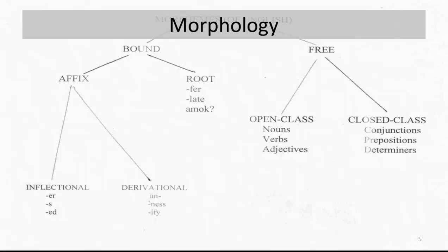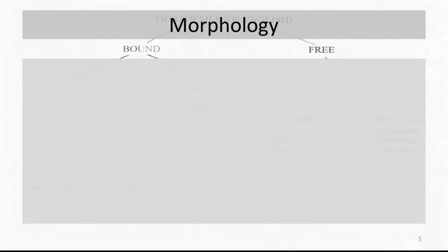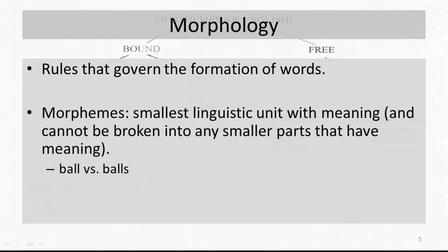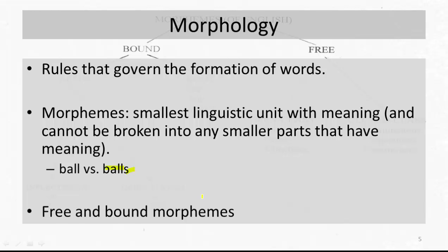Morphology is the system that governs the structure of words and the construction of word forms. A morpheme is the smallest grammatical unit in a language — in other words, the smallest meaningful unit of a language. How many morphemes does the word 'ball' have? Of course, one. 'Balls' involves two: the free morpheme 'ball' and the bound morpheme, the plural 's.'